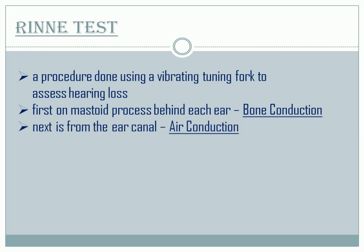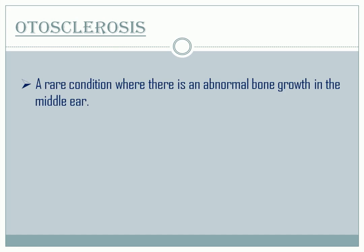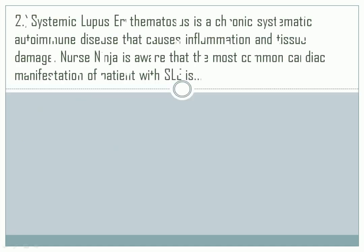Next, it is placed near the ear canal and the patient is asked to indicate when the sound caused by the vibration stops. This is to check the air conduction. The normal result is air conduction is louder than bone conduction, giving a positive Rinne test. Otosclerosis is a rare condition where there is abnormal bone growth in the middle ear. The result of the Rinne test in a patient with otosclerosis is that bone conduction is louder than air conduction, giving a negative Rinne test and a condition called conductive hearing loss.